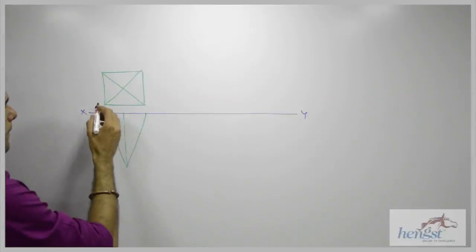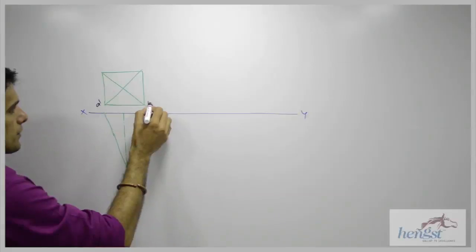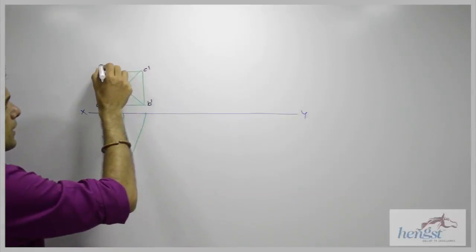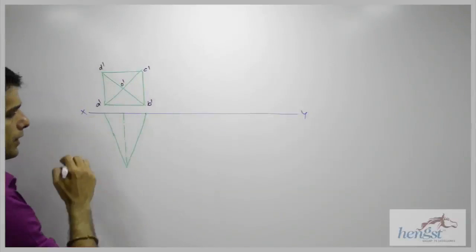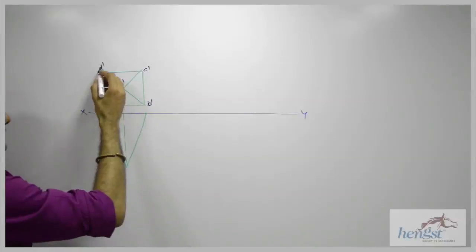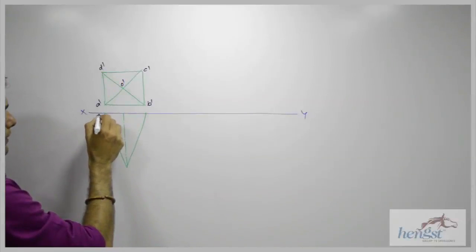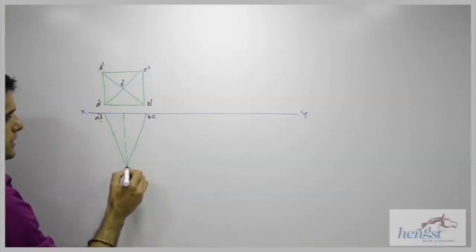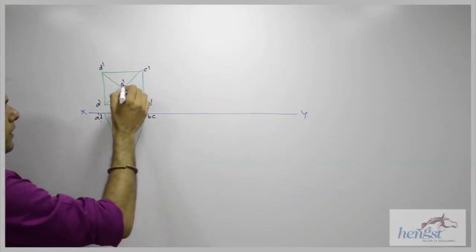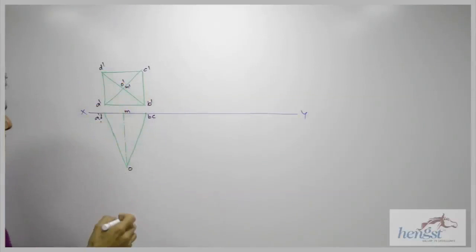So this is A dash, B dash, C dash, D dash, O dash. Same way I can mark A, D, B, C, O. I can write M. This is M dash. So we are done with front view labeling.